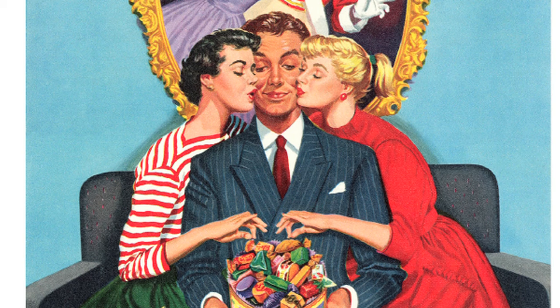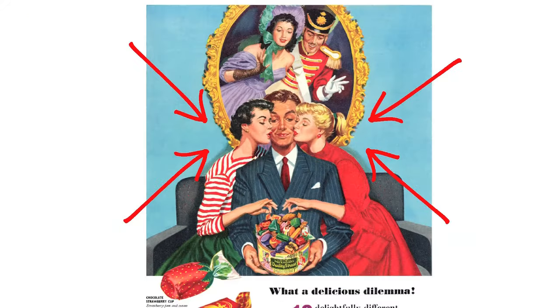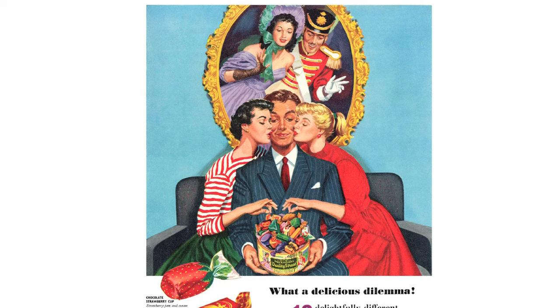If you're doing GCSE on the Eduqas exam board, in your Quality Street text, you'll be able to see that the man in the Quality Street advert is in the centre of the advert. You've got the women around him, surrounding him, looking up at him as though he's some kind of hero, and all of the images point to him in the middle of the picture, drawing our attention to him and making him seem very powerful. So he's been represented as a kind of hero in this advert.